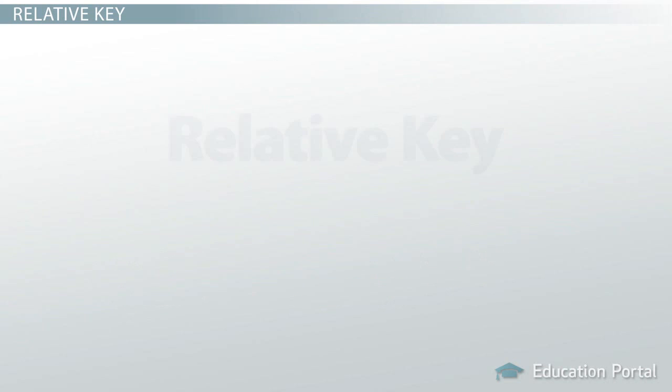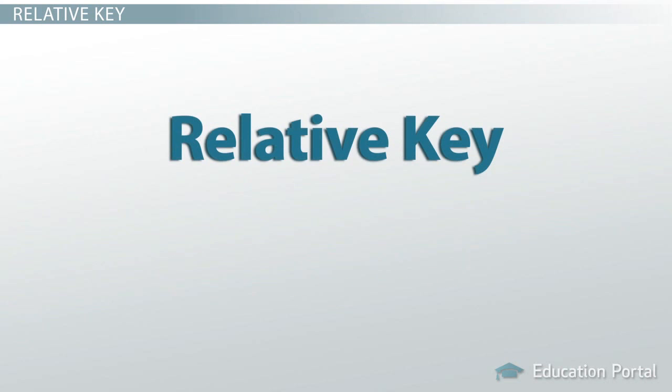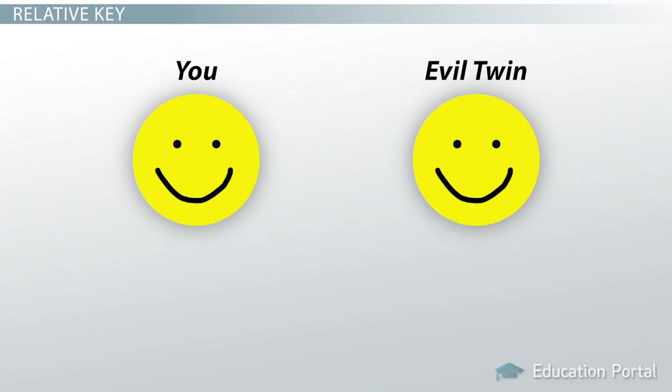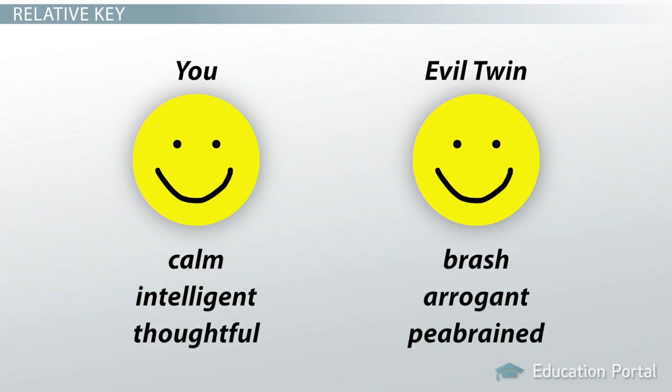This is called relative key. Relative keys are major and minor keys that share the same key signature. It's like if you had an evil twin. Although you look the same and you have the same DNA, you are two totally different people, and you act differently.